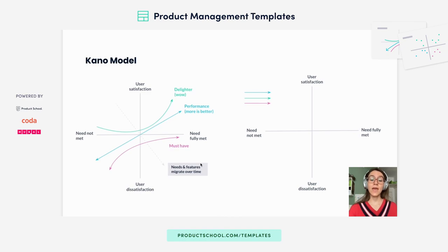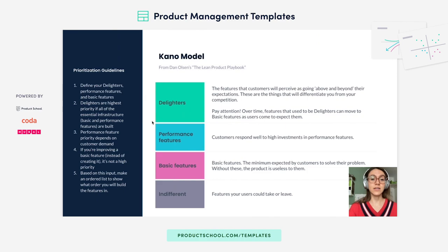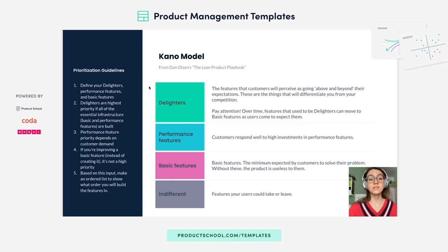Next, we have Kano. Kano is great if you want to really level up and elevate your product. If you want to stand out from the competition, the idea is that over time there are diminishing returns on those essential features. After a certain point, what you need to focus more on are those performance and delighter features. So you see here those parameters: delighters, performance, and basic features. You are going to end up with an ordered list from highest to lowest priority based on these and based on the weight that you give them in your ranking.